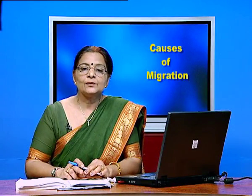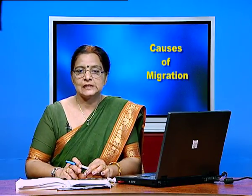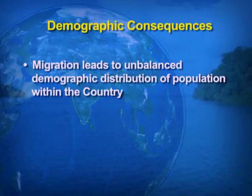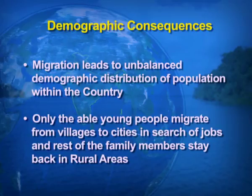Now we talk about the demographic consequences. Migration leads to unbalanced demographic distribution of population within the country, because only able young people migrate from villages to cities in search of jobs. The negative impact is an imbalance in the age and sex ratio in both areas — the areas they migrate to and the areas they migrate from.